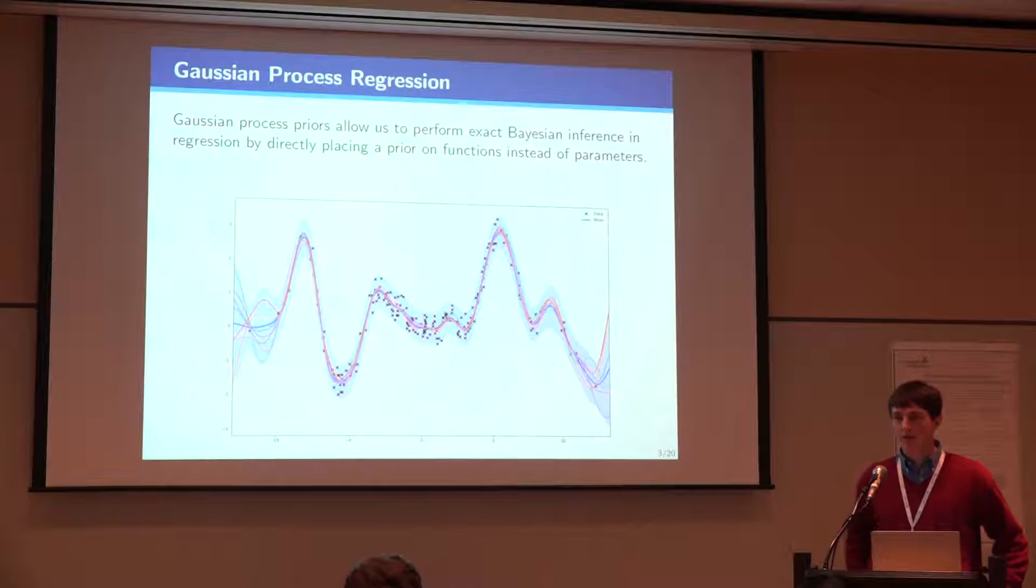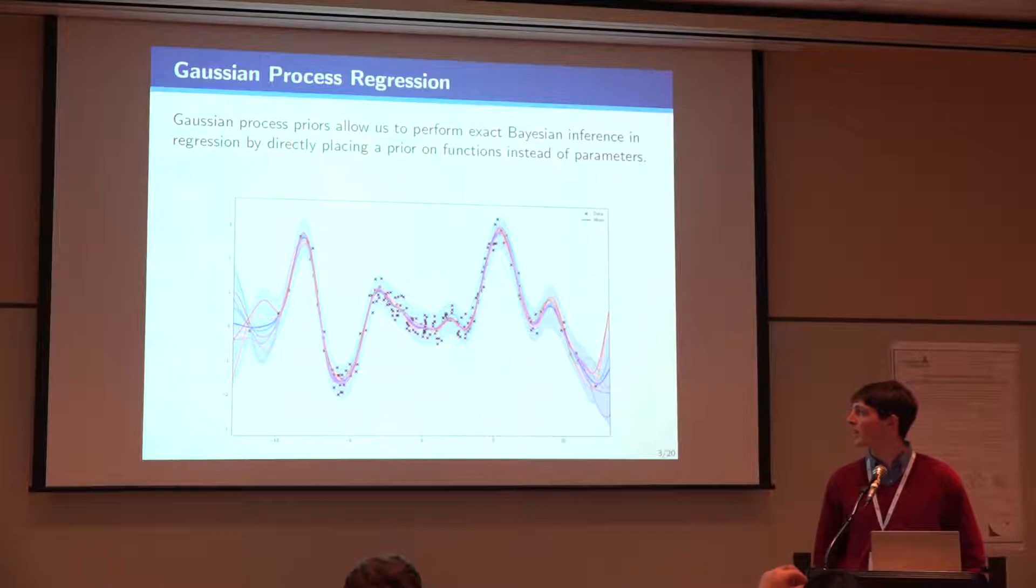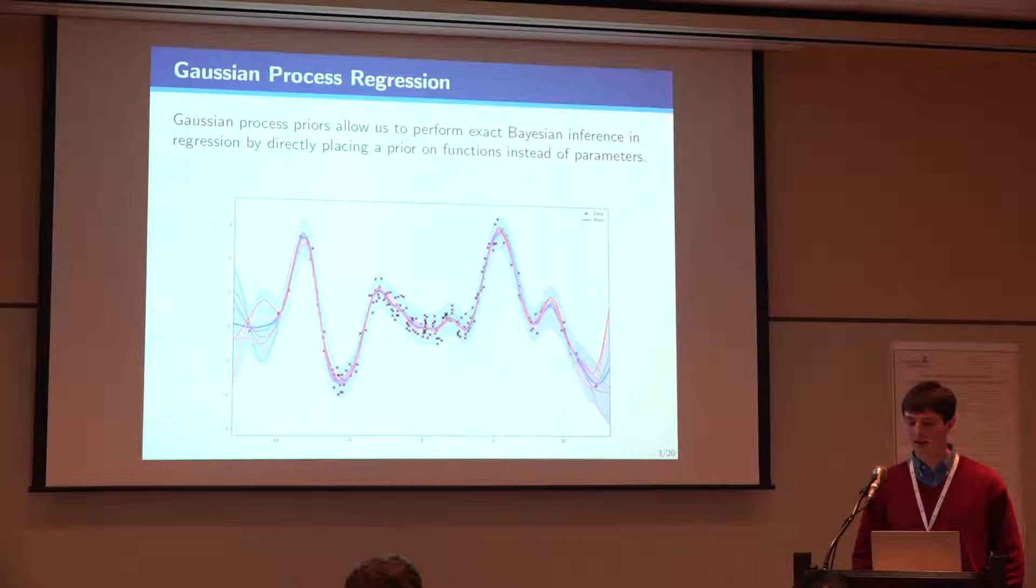The standard setup for Gaussian process inference is that we put a prior directly over functions instead of parameterizing it. And this lets us perform non-parametric Gaussian inference. We can get a nice posterior over functions, draw samples from those functions and get good estimates.